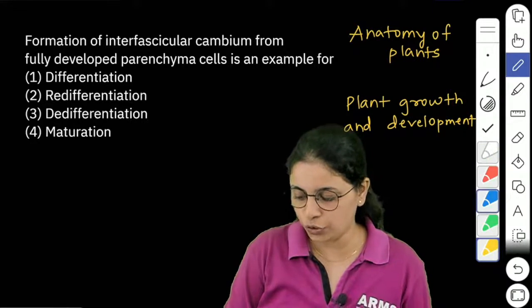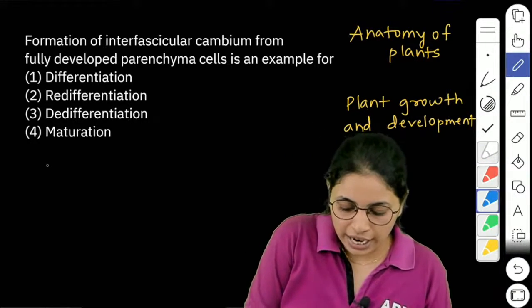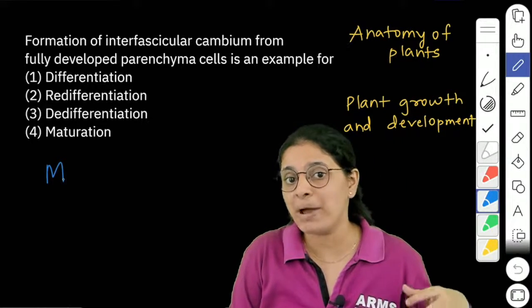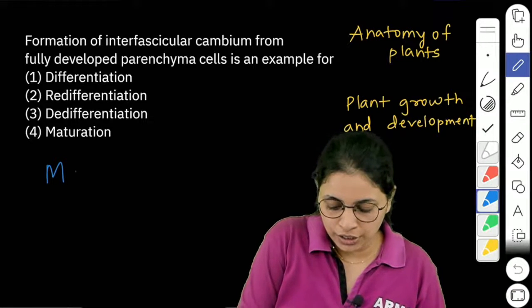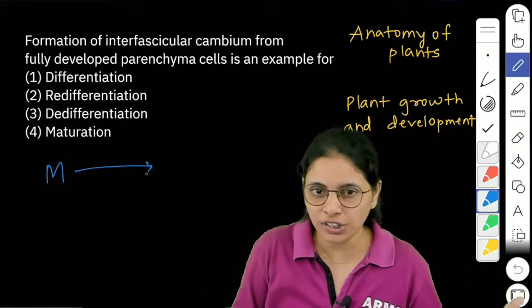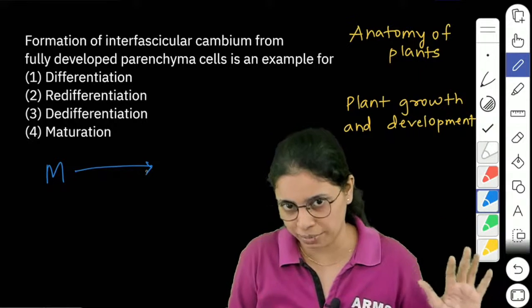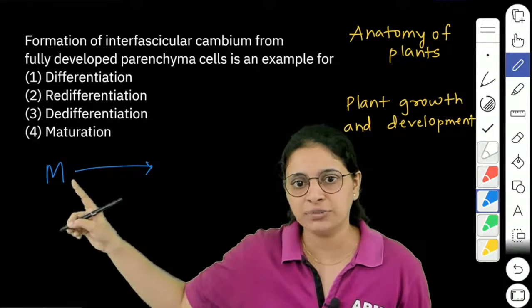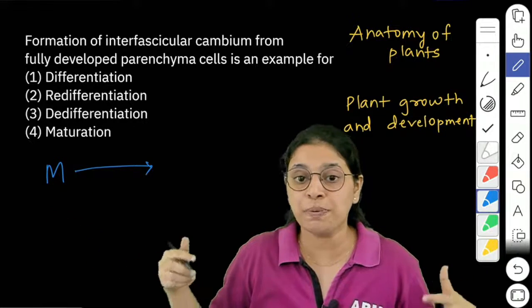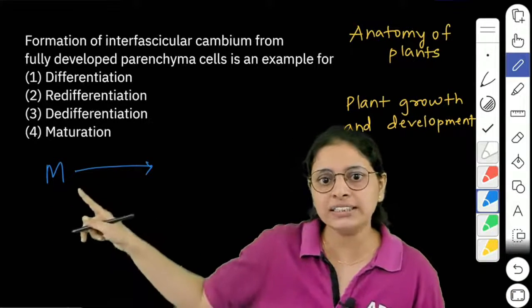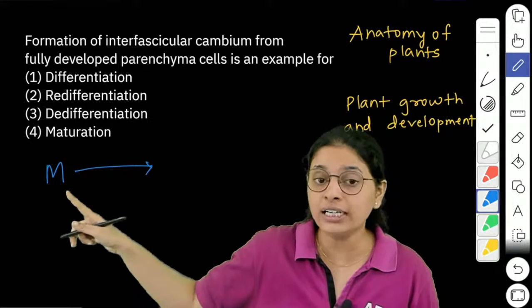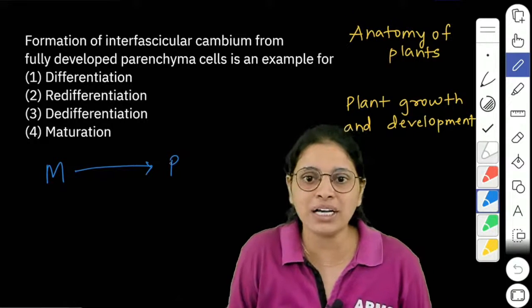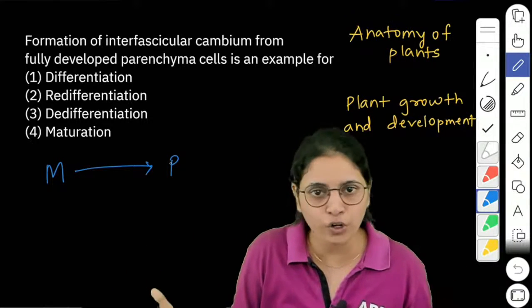Now what we have studied so far is that if you have a meristematic cell and it gets matured, achieves a specific shape, size and function, but loses the cell division ability. So meristematic is dividing cells. Meristem means dividing cells, but they are not specialized structurally and functionally. Now these unspecialized or undifferentiated meristematic cells, when it forms permanent cells like any parenchyma or collenchyma, then this process is differentiation.